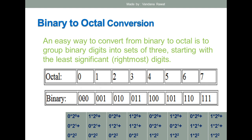For example, take the binary set 0 0 0. Multiply from the LSB: 0 × 2⁰ + 0 × 2¹ + 0 × 2² = 0. So if there is a set of triple zero (000), the octal representation is directly 0.